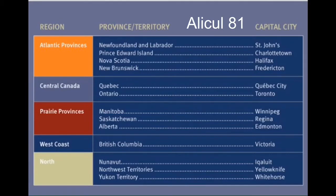In central Canada, Quebec City is the capital of Quebec. Toronto is the capital of Ontario. In the Prairie provinces, Winnipeg is the capital of Manitoba. Regina is the capital of Saskatchewan. And Edmonton is the capital of Alberta. On the west coast, Victoria is the capital of British Columbia.